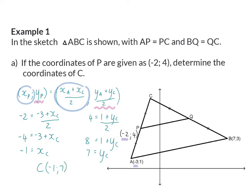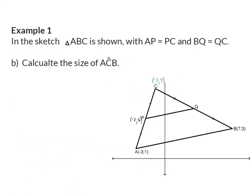You could also choose to focus on the translation from the x-value of A to the x-value of P, which is adding 1. If you repeat that and add 1 again, you get the x-coordinate of C, which is minus 1. For the y-values, we start at 1 and translate 3 up to get to 4. If we repeat that and move 3 up again, we end with 7.